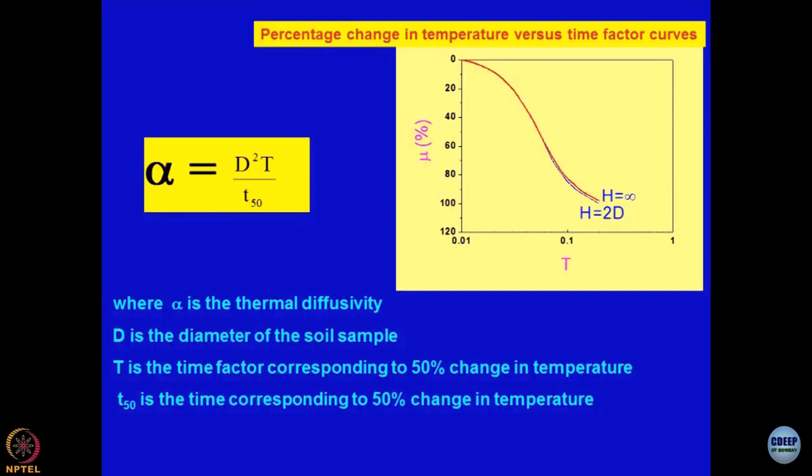Some more similarity between the consolidation studies which you do and the heat experiments which we are doing. If I define a term as percentage increase in temperature of the soil mass and this is the time factor T which corresponds to 50% change in the temperature. This equation is well known to you. Corresponding to T 50% change is somewhere here. For 50% mu value you can get capital T, you can substitute it over here and get diffusivity. These devices are now quite commonly used and you can read about them in the published literature.